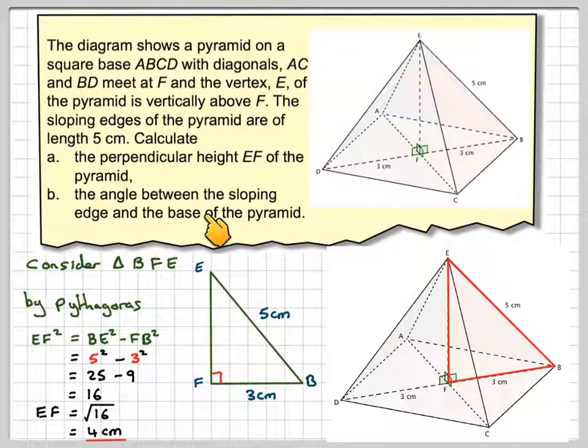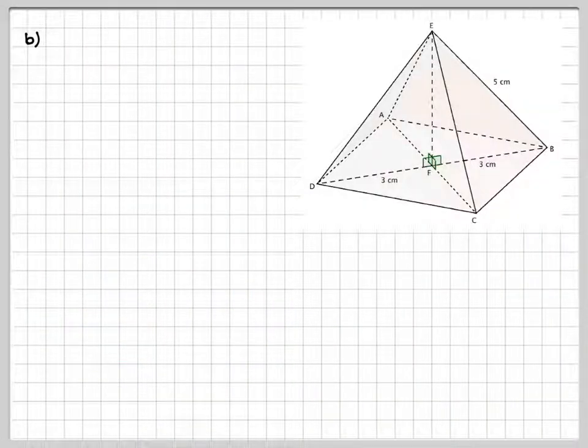Now we need to calculate the angle between the sloping edge and the base of the pyramid. The sloping edge is one of these here, not this all of this. This is a sloping edge between the base of the pyramid.